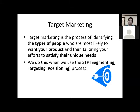So in target marketing, we identify the types of people who are most likely to want the product and also the types of people whose needs the product or service can satisfy. Like I said, this can be done through a process called STP — segmenting, targeting, and positioning.